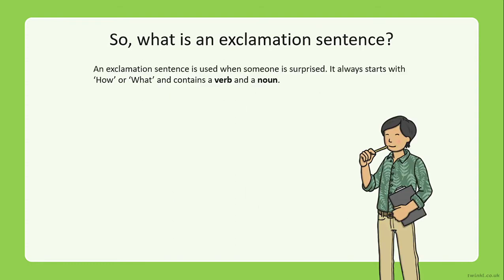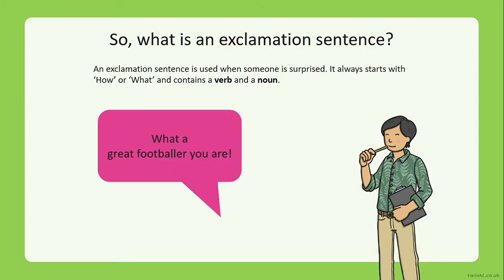So what is an exclamation sentence? An exclamation sentence is used when someone is surprised. It always starts with how or what and contains a verb and a noun. Let's look at some of them. What a great footballer you are. So it starts with what and it's got an exclamation mark at the end. How kind you are.